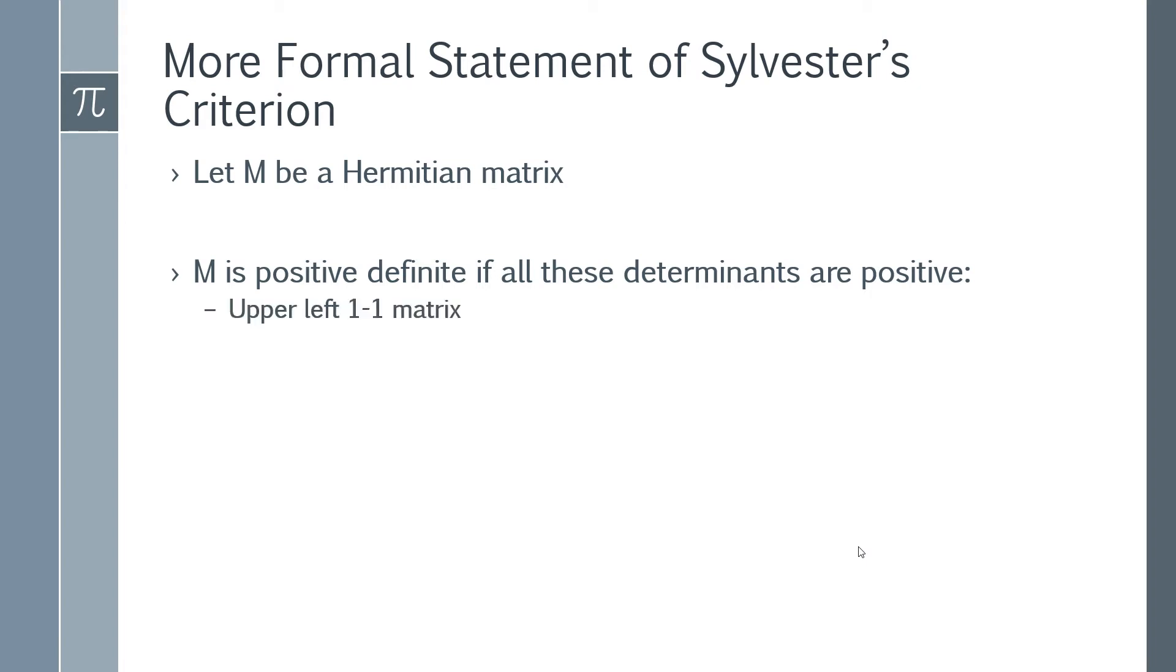Let's look at a more formal statement of his criteria which is what he actually wrote if you go all the way back. So if we let M be a Hermitian matrix, M must be positive definite if all of the following determinants, so if you calculate all of these on my list, if they're all positive it must be the case that the matrix is positive definite and this works for all square matrices.